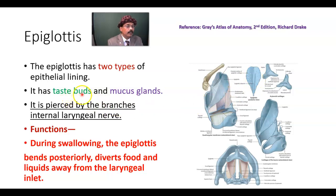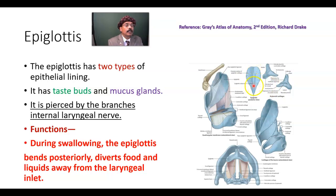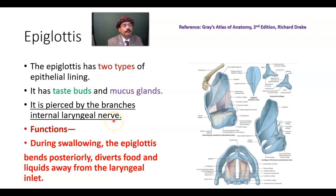The epiglottis has taste buds, which are present in many places such as the tongue, the pharynx, and the soft palate, and also in the epiglottis. It has mucus glands that form depressions. Posteriorly, we get the epiglottic tubercle. The epiglottis is also pierced by branches of the internal laryngeal nerve.